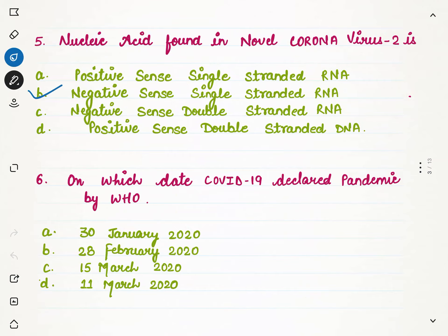The next question is: COVID-19 was declared a pandemic by WHO on which date? The correct option is D — 11th of March 2020. The first case actually came in China, and then it slowly spread to other countries because the world is a global village and due to globalization many people travel from one country to another. In India, lockdown was launched on 22nd March — the Union Government declared a lockdown in India on 22nd March.